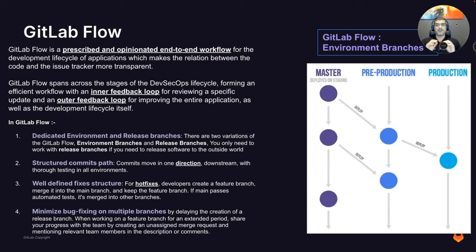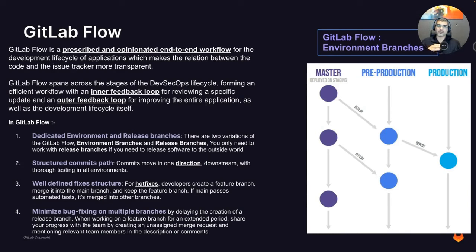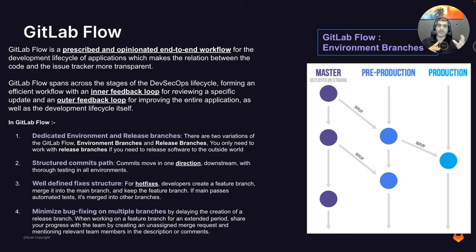In GitLab Flow, commits move in one direction—a very important differentiator from Git Flow. All development is done in the master branch using feature branches: you merge into master, test in your feature branches as the inner loop, then merge into master and test there. Then you move on into the different environment branches. If anything is found wrong, best practice is to create a feature or hotfix branch again from master, apply changes, test them, and then merge all the way across the different environment and release branches.